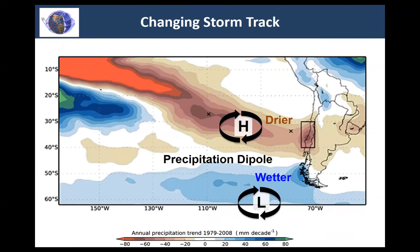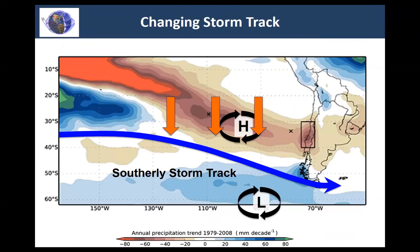What's responsible for this drying trend gets back to Hadley cell expansion. The subsidence of the Hadley cell is expanding and moving further south, pushing the storm track further into Patagonia — so you're not getting storms that used to hit central Chile. This is interacting with the Southern Annular Mode (SAM), and the projections for the future show this is going to continue for decades.